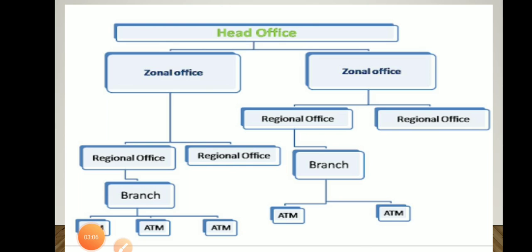We can understand branch banking through this flowchart. For example, SBI — the first head office is situated in a big town, and some zonal offices are situated in different places. Then after that come the regional office and branch. This means from the head office down to the whole flowchart, that bank is available everywhere.